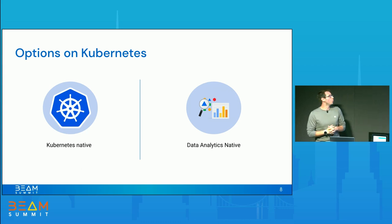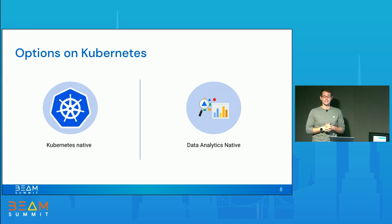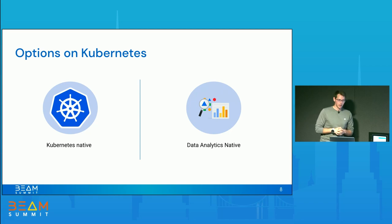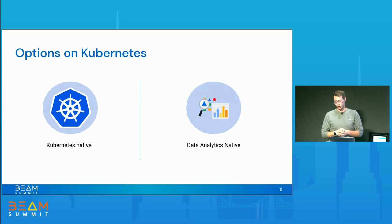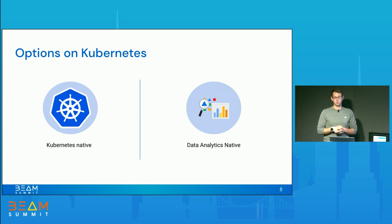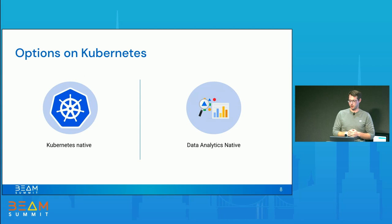What options do we have on Kubernetes? On one hand, there are the Kubernetes-native approaches, which are workflow management tools purposely built for Kubernetes, such as Argo — where you could run your pipeline as a container or each step of your pipeline as a container and chain them together however you want. On the other hand, there are the data analytics-native options, such as Spark or Flink, which already existed and were brought to Kubernetes, providing the capability to run your pipelines on Kubernetes.